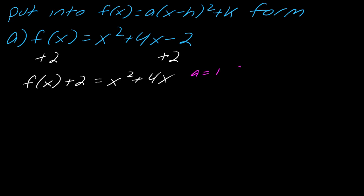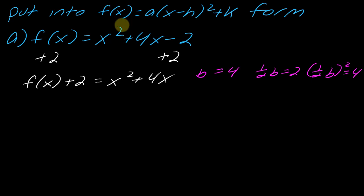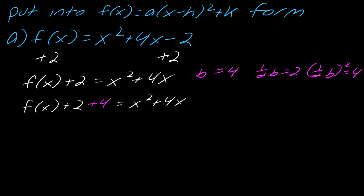Now I've got f(x) plus two equals x squared plus 4x. So now I want you to complete the square on this side. My b is four. My half-b is two. And then my half-b squared is four. So I need to add this four to each side: f(x) plus two plus four on the left, and x squared plus 4x plus four on the right.